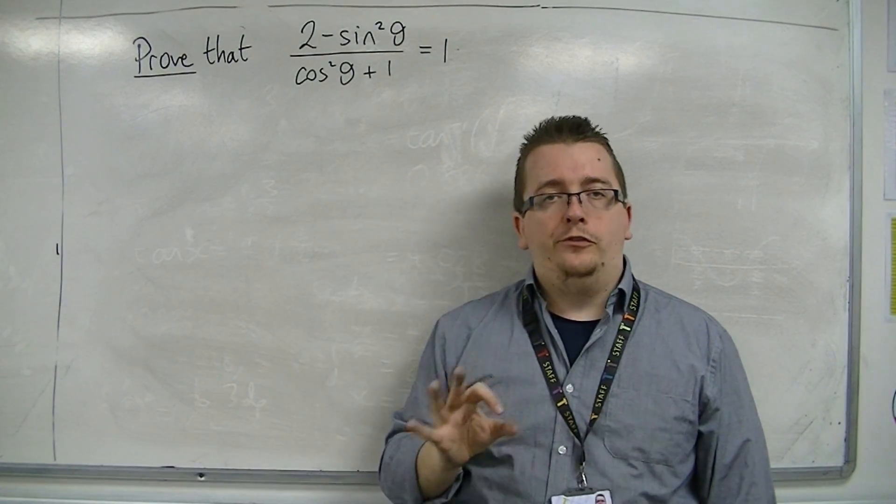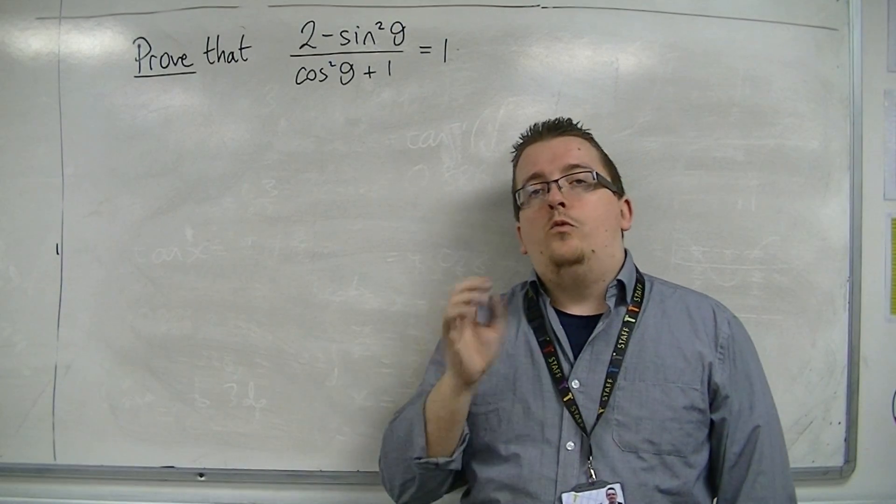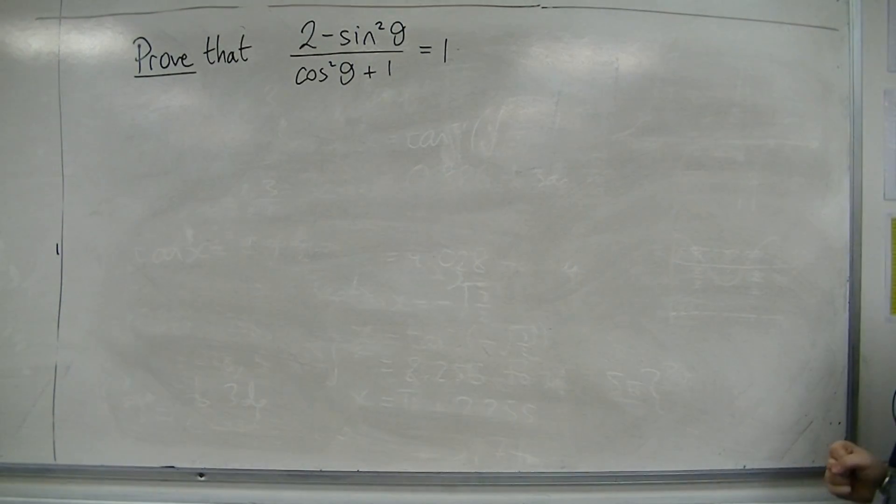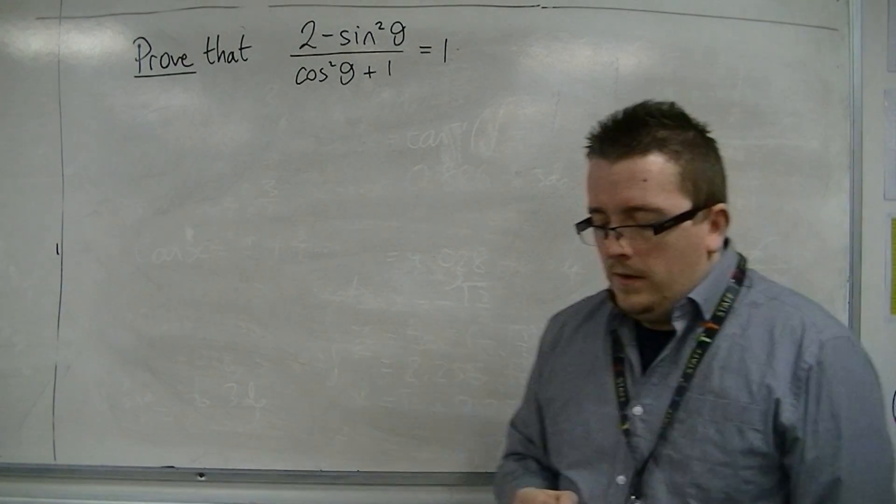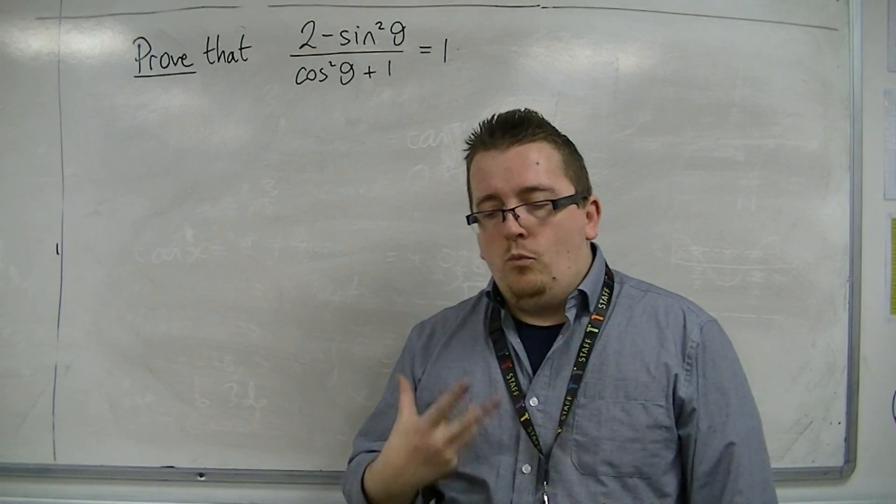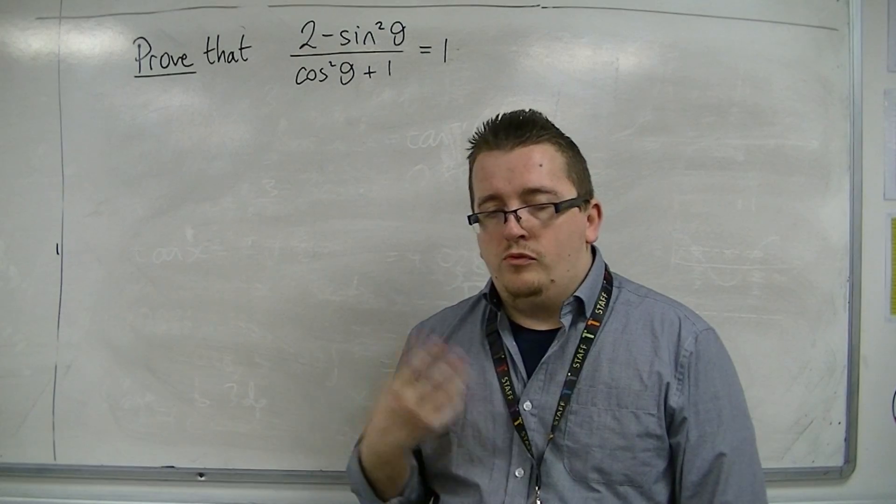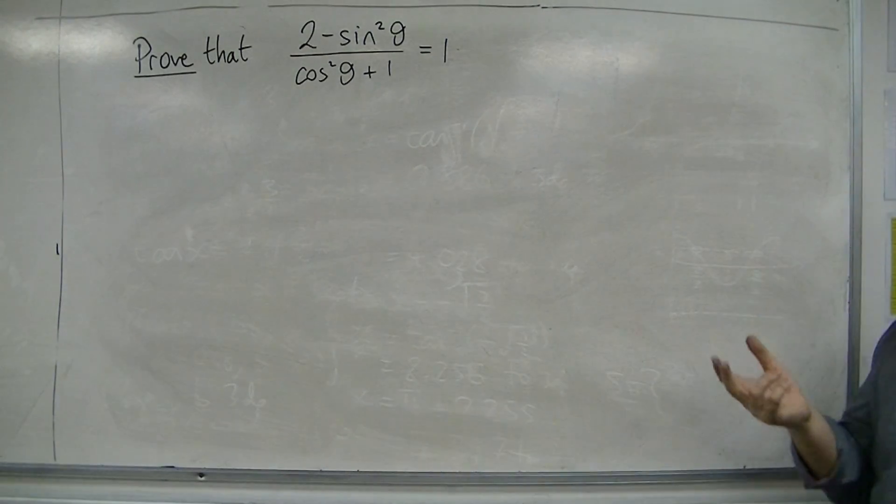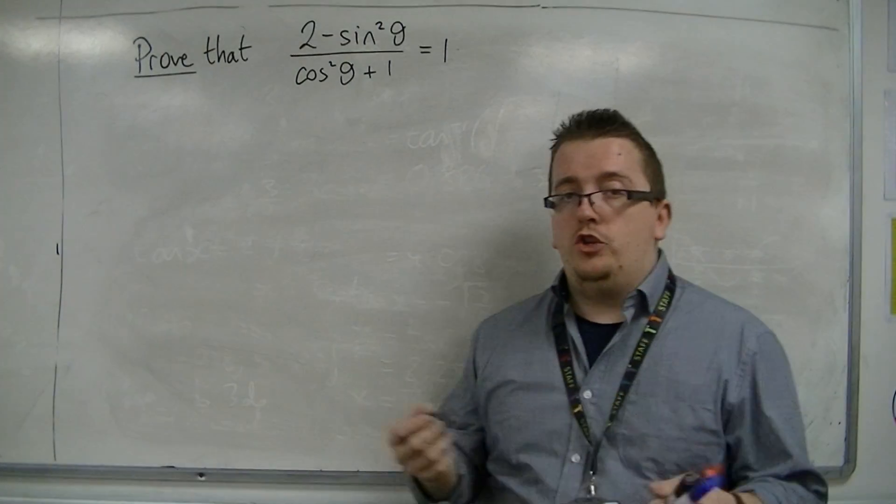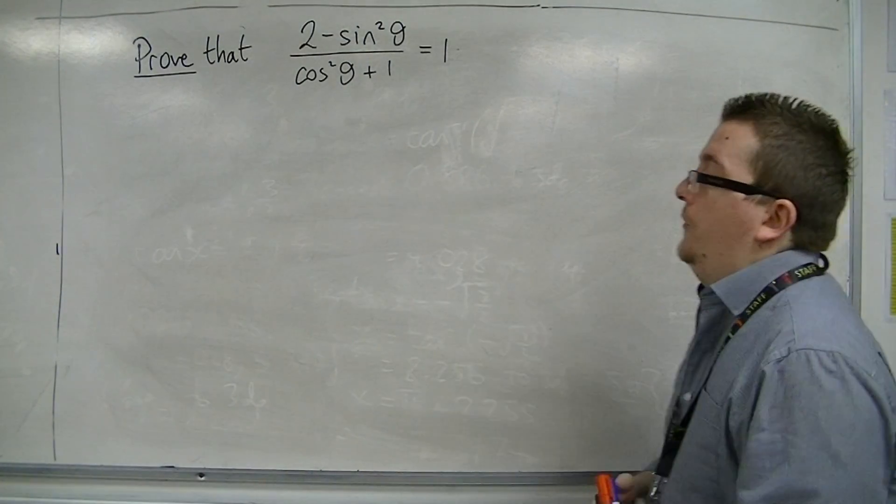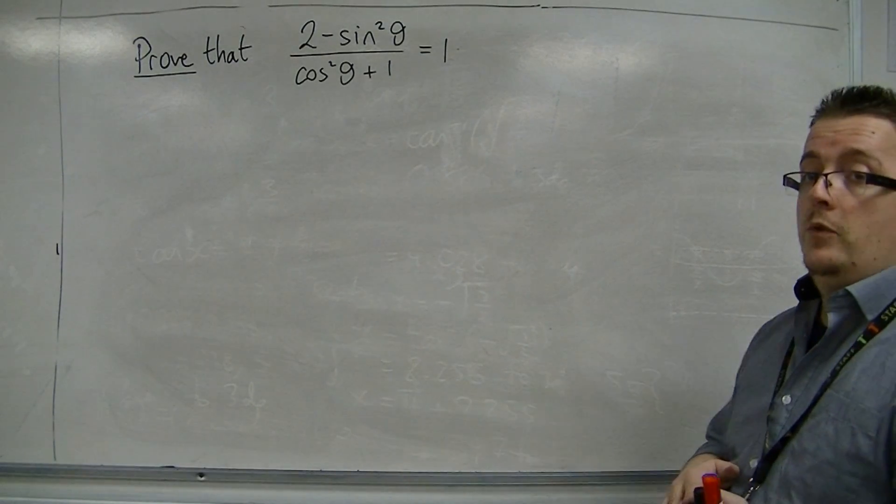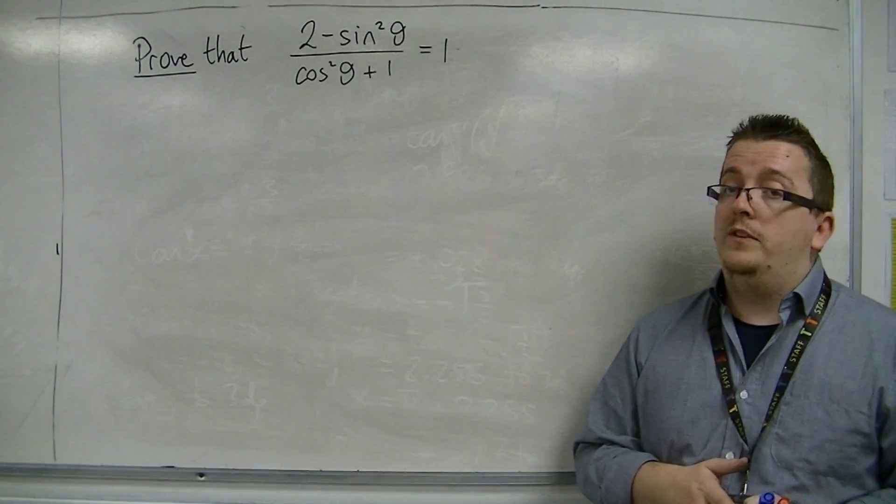We're not being asked to solve this. We're asked to prove it, or to show that this is true. Now, there are many different ways of proving something, and with trig identities there can be slight variations. The person next to you might prove this in a completely different way, but both may still be perfectly valid.